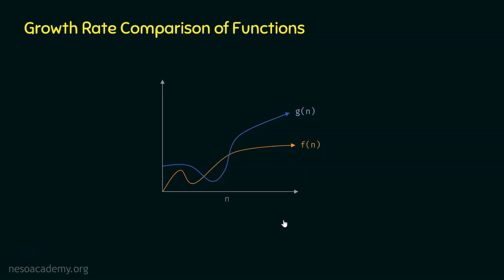I would like to ask: is it the case that G(n) is bigger than F(n), or is F(n) bigger than G(n)? After some point, G(n) is greater than F(n) — that is the point I am talking about. After this point, it is guaranteed that G(n) is bigger than F(n). But before this point, we cannot guarantee that; sometimes G(n) is lesser than F(n) and sometimes greater. But after this point, G(n) is always bigger than F(n).